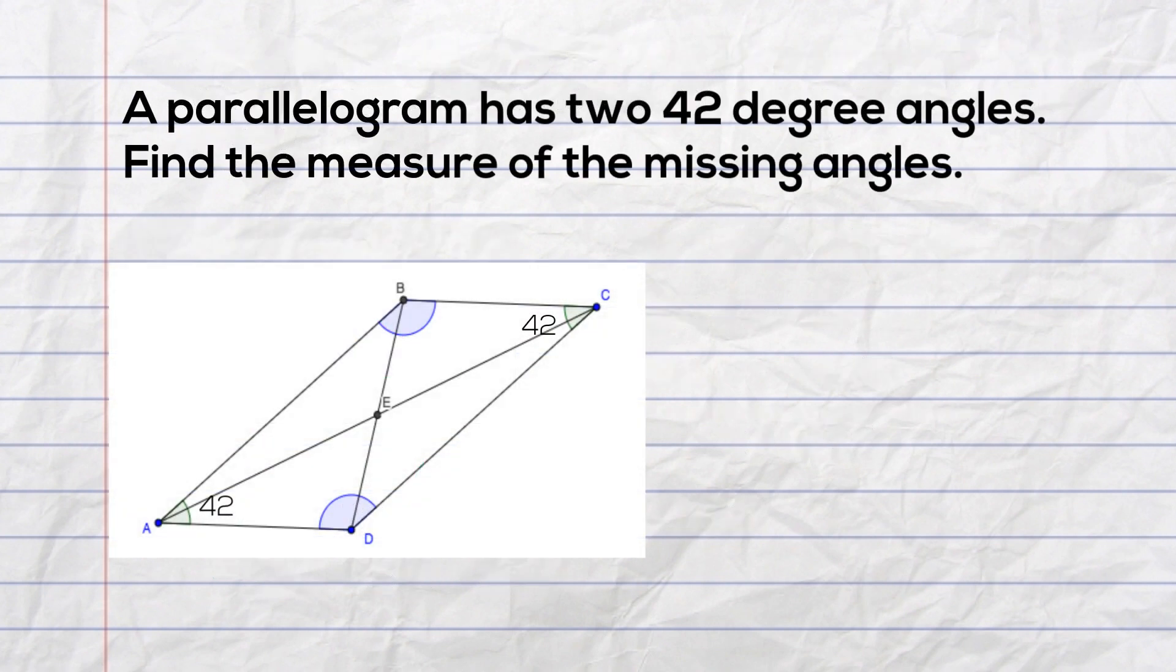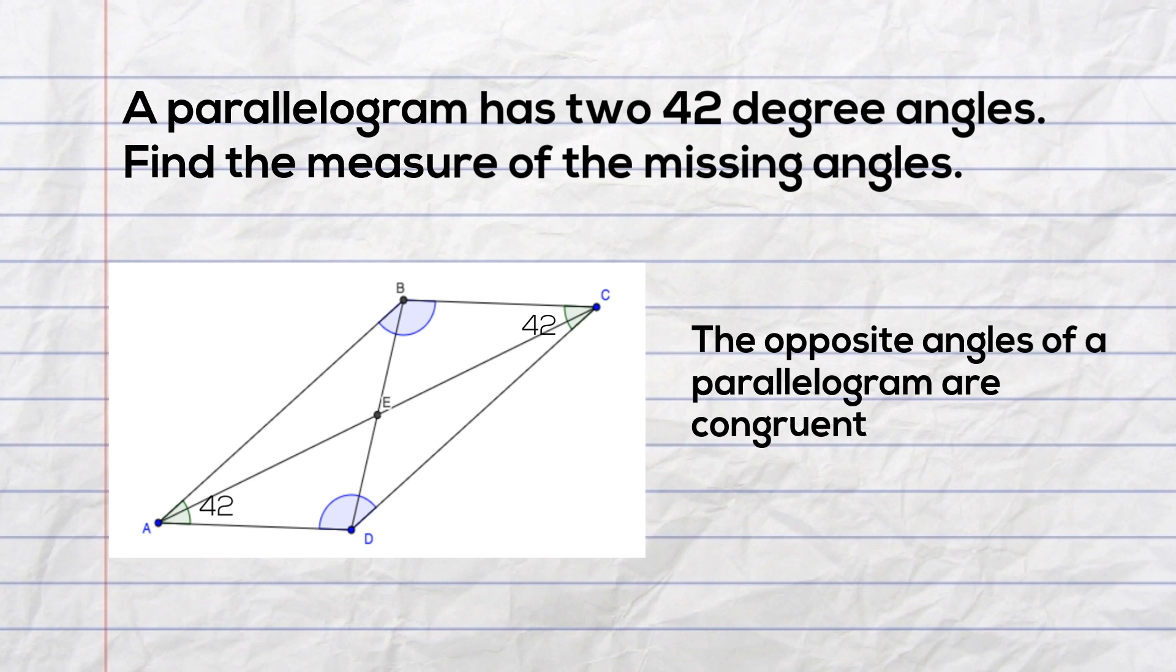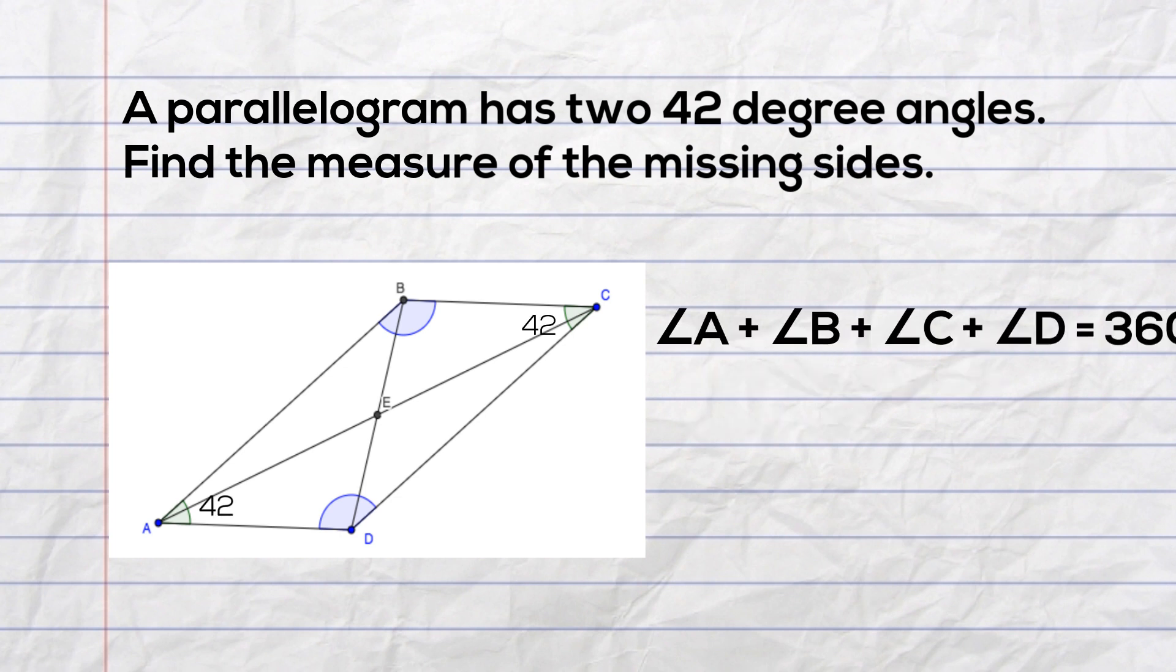In this example I have a parallelogram that has two 42 degree angles. Find the measure of the missing angles. I have only two angles given, but it is a parallelogram and opposite angles of a parallelogram are congruent. So I will set it up just like I did the previous question and plug in the numbers I have.